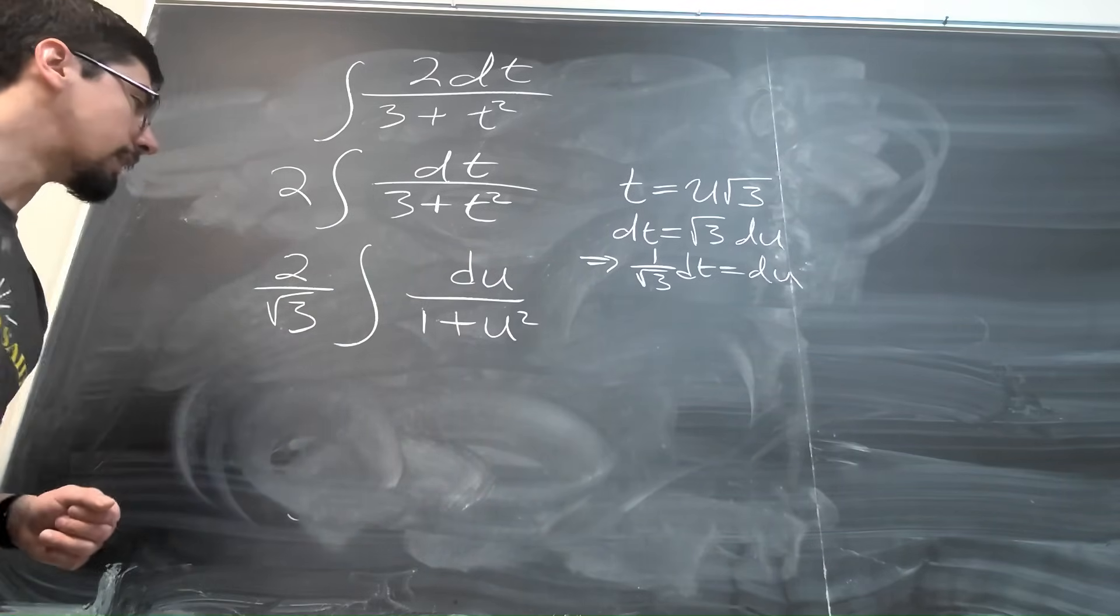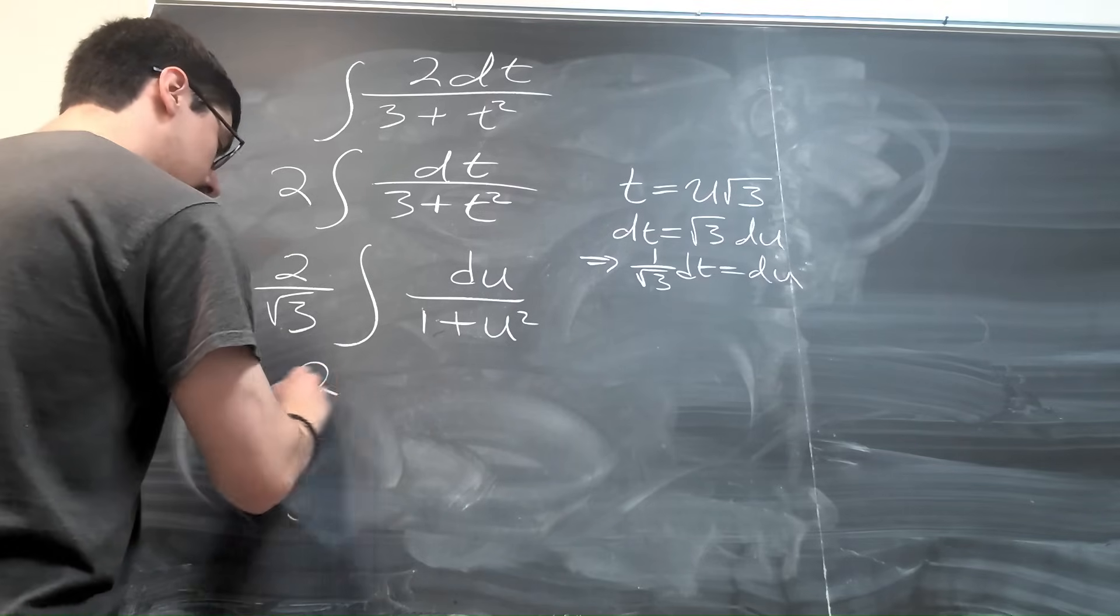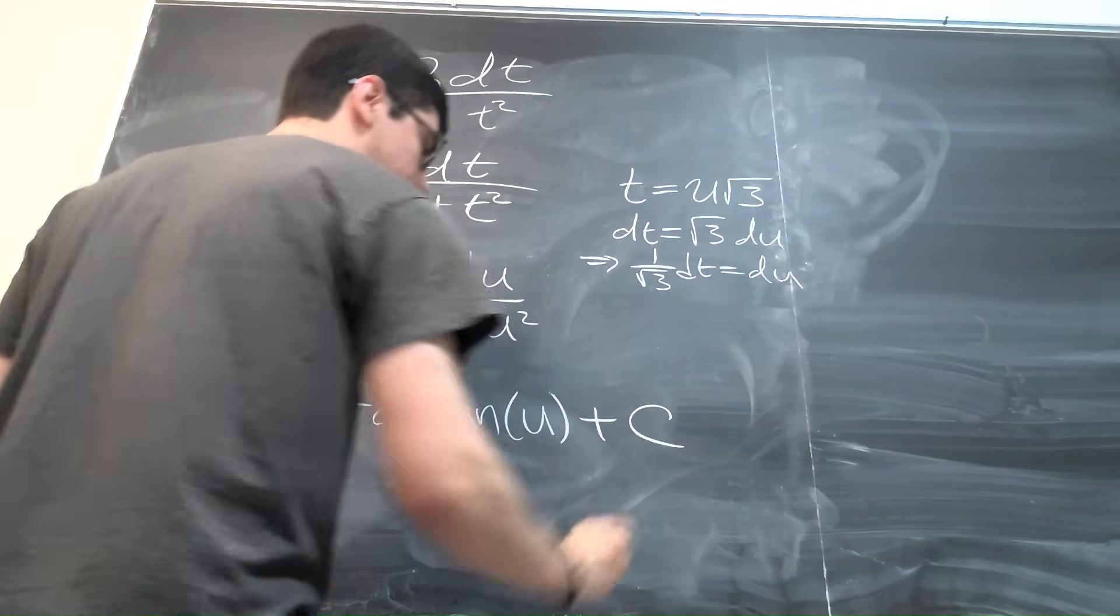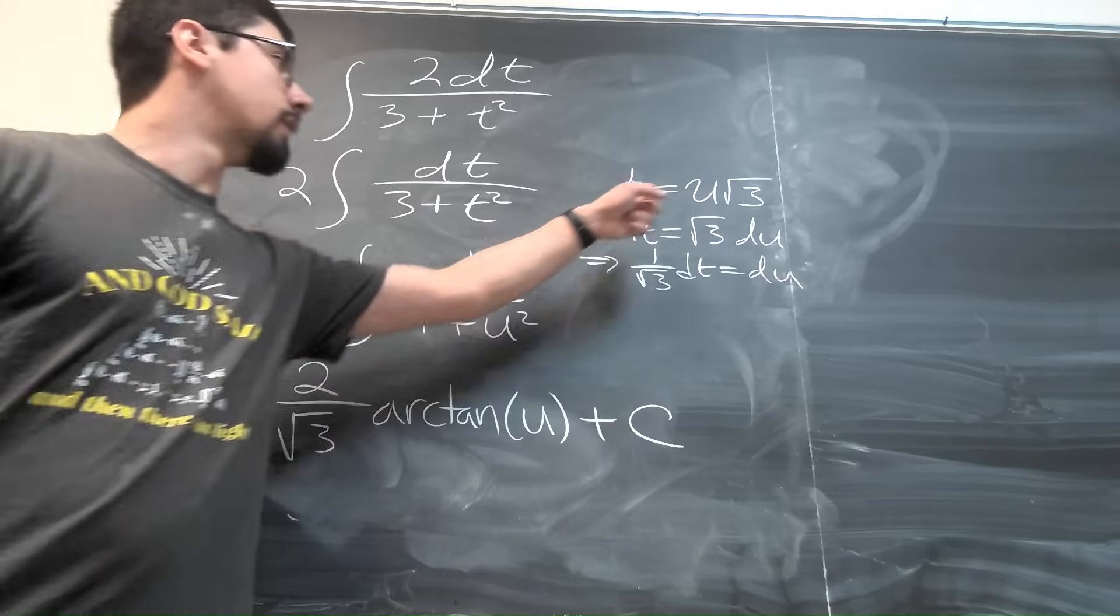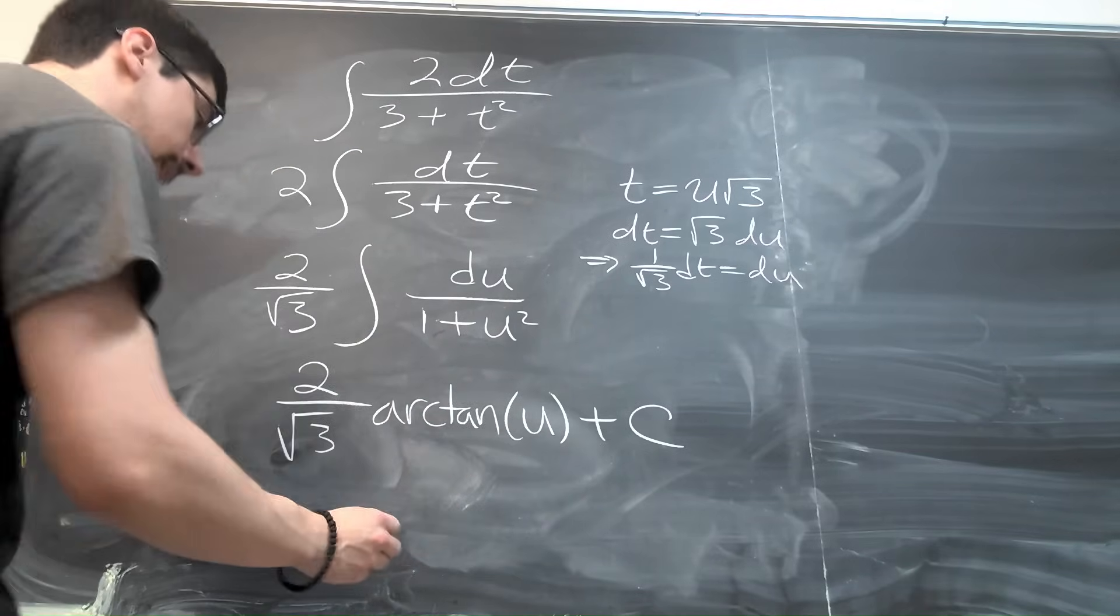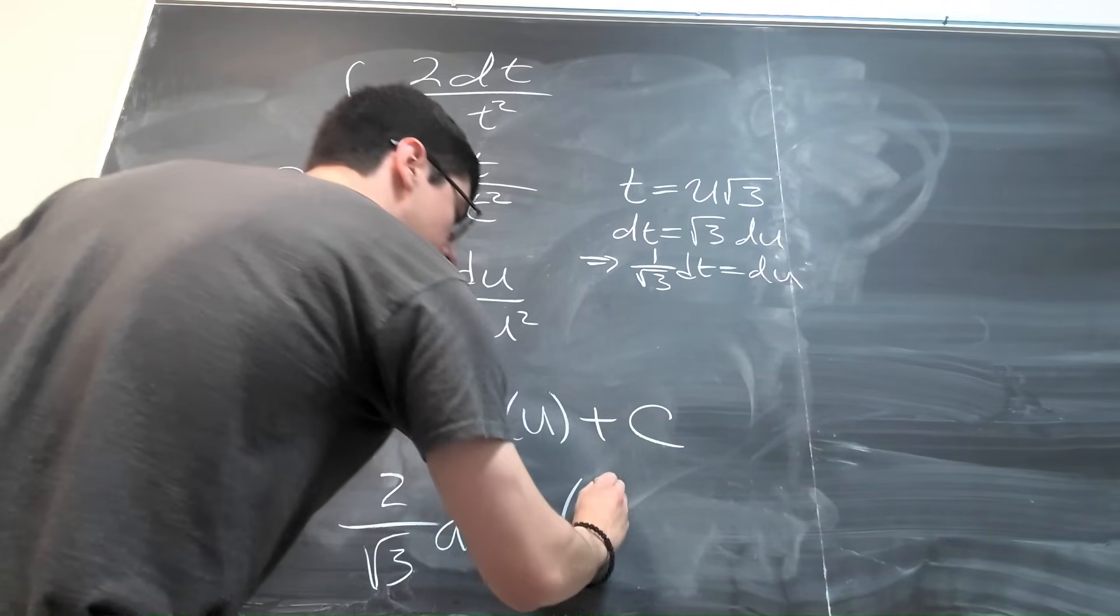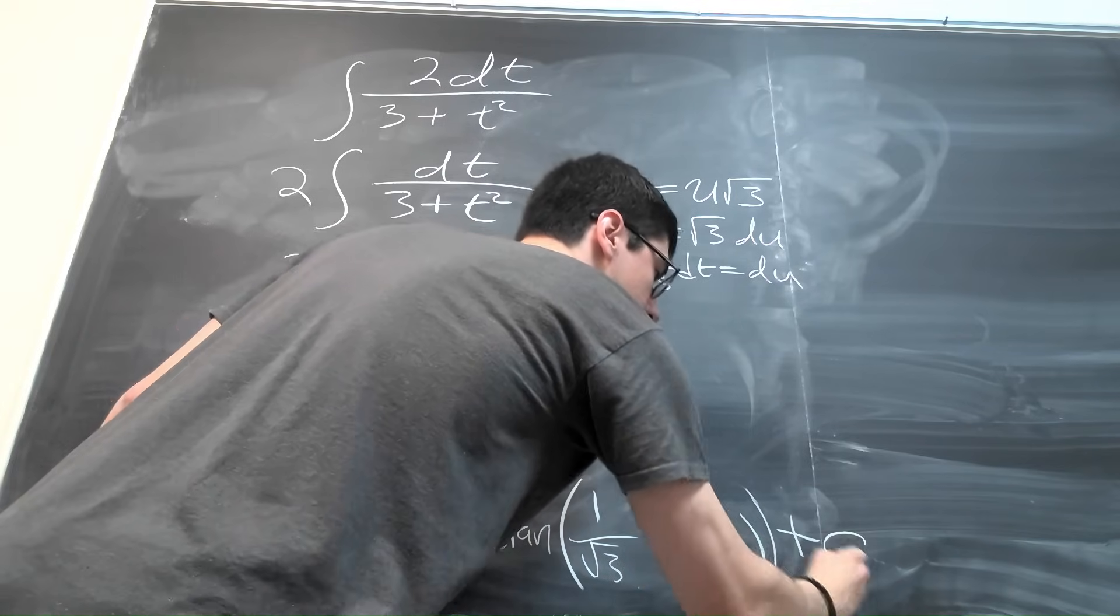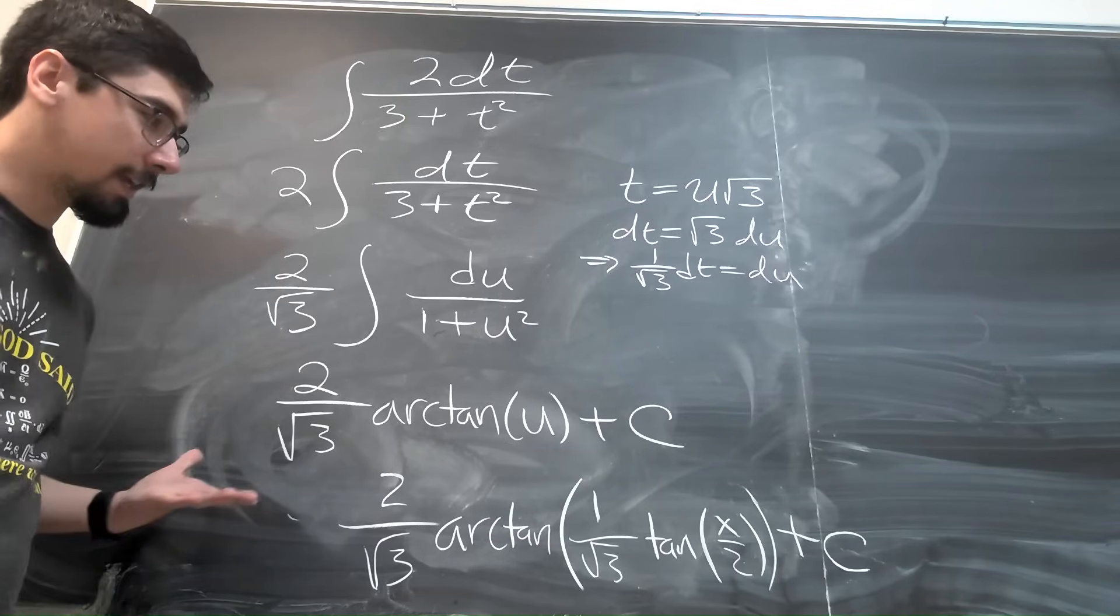I might have skipped over some of the algebra, but that's fine. And this, we've seen before, you know it, you love it, it's the arctangent of u. And so that gives us 2 over root 3 arctangent of u plus a constant c. And what is u? U is, well, according to this here, it's going to be t over root 3, and t is just the tangent of x over 2. So plugging everything back in gives us a final answer of 2 over root 3 arctangent of 1 over root 3 tangent of x over 2 plus c. And so now we've taken that gnarly integral from before and turned it into this nice expression here.